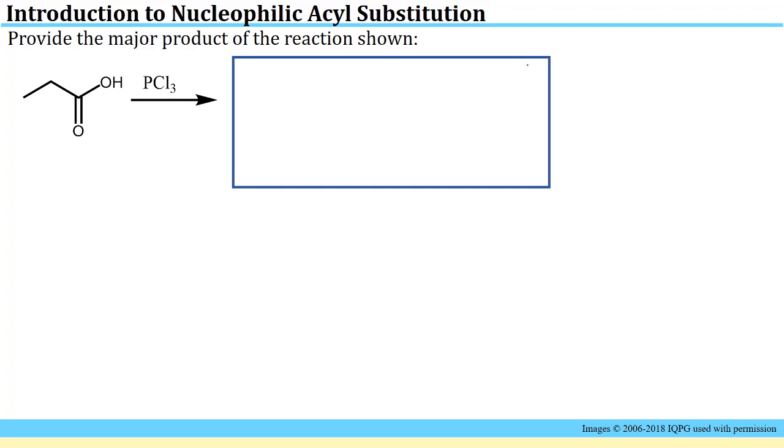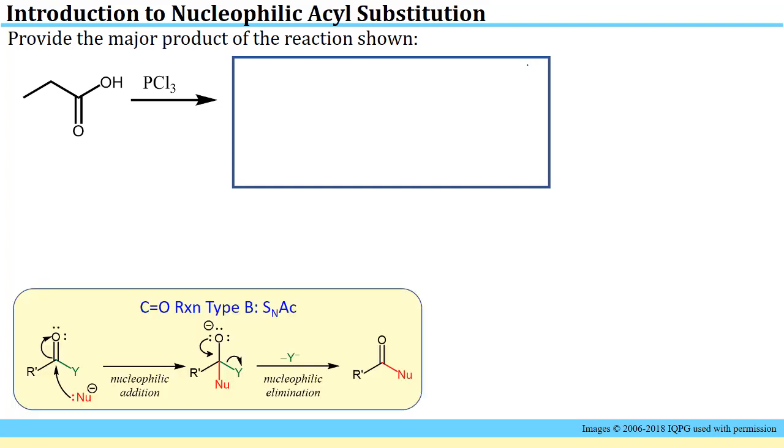The next reaction is quite similar. We see a carboxylic acid and think about the general nucleophilic acyl substitution mechanism. We identify something that can be activated to be a leaving group, and we identify that the chlorine part of the phosphorous trichloride will be the nucleophilic entity. The net result is that the OH will be replaced by the chlorine, so we'll get an acid chloride again.